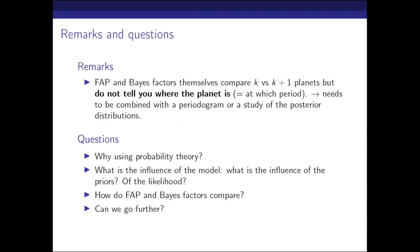The FAP and the Bayes factor compare K versus K+1 planets, but they do not tell you where the planet is or at which period it is. Your analysis needs to be combined with a periodogram or a study of the posterior distribution of the period, to see whether you strongly privilege a certain region of the posterior for the planet. It doesn't make sense to say 'I have one more planet' but not know if it's an Earth at 100 days or a Jupiter at 60 days. In practice you will have a region of the posterior where the power is condensed, and if that's not the case you need to discuss it thoroughly.